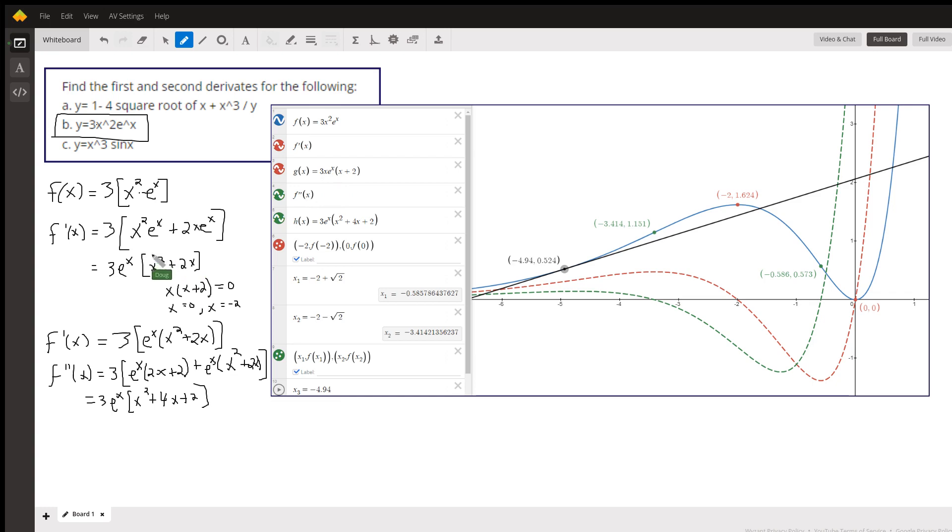But when we get ready to do y double prime, if I write it like this I've got to employ—it gets very complicated. So I'm thinking of it like this: 3 e to the x times x squared plus 2x.